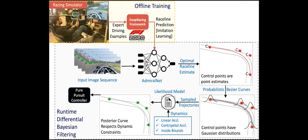The key innovation in Differential Bayesian Filtering is that instead of predicting a fixed trajectory, we learn a Gaussian distribution over the control points of a Bezier curve. This allows us to sample candidate trajectories from a distribution of curves, enabling the algorithm to generalize beyond the samples gathered during training. The sampled trajectories are then filtered to select the trajectory which is closest to the specified vehicle dynamic constraints while respecting the track bounds at all times.